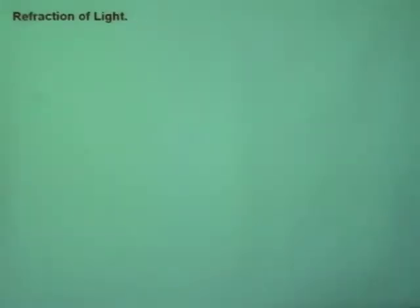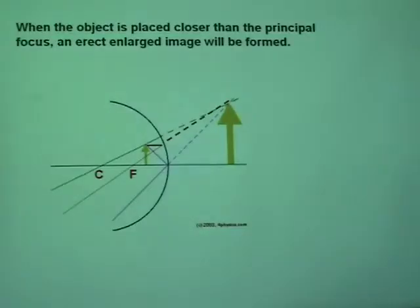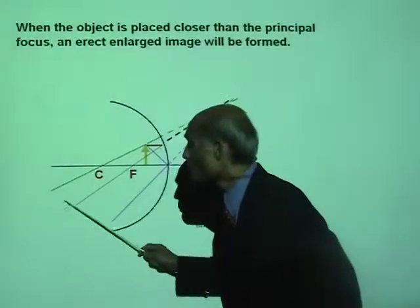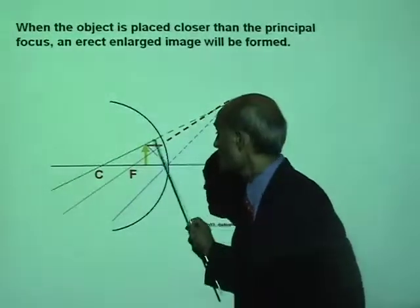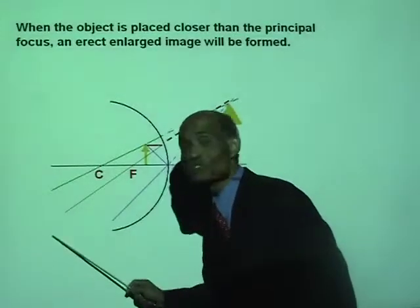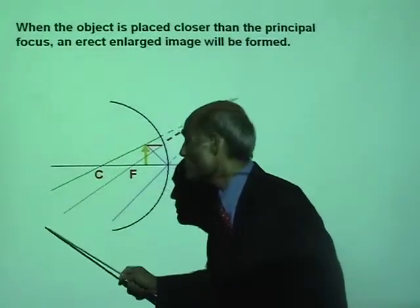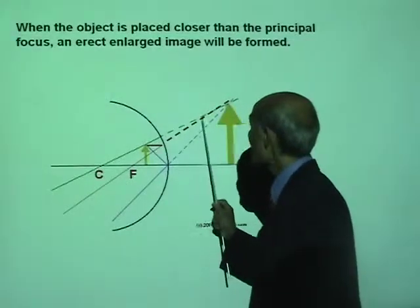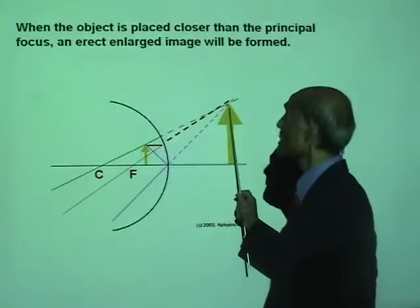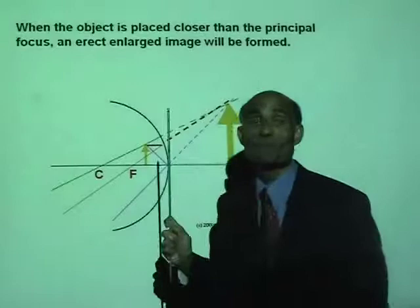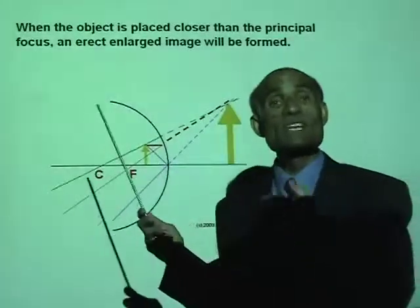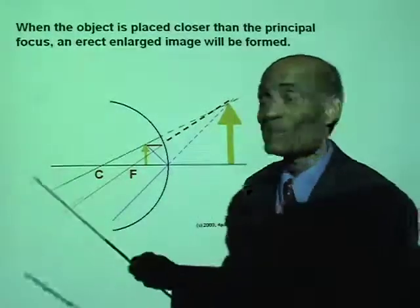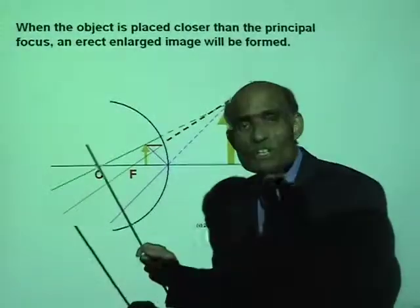Why is this not a real image? When you look from here, these reflected rays really do not meet. But when you look from here, these reflected rays will appear to be coming from behind the mirror. So this is an image similar to the one formed in the plane mirror — this is a virtual image.